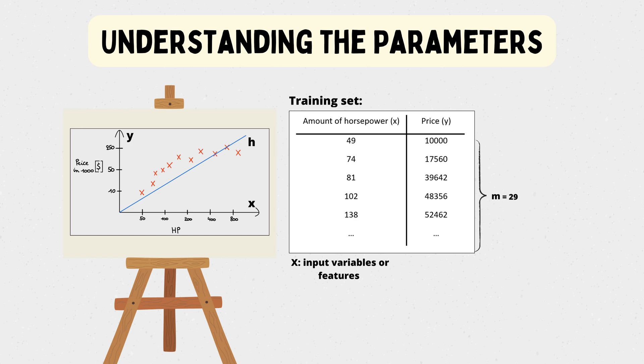We also have y, which is the output variable or target variable we want to predict. If we want to talk about a specific training example, we will denote it with a superscript. If we want to talk about the ith training example, we will use this notation. To get familiar with this, let's look at some examples.